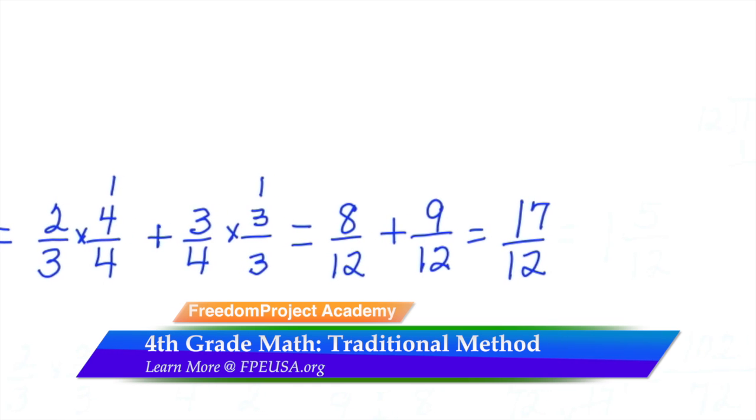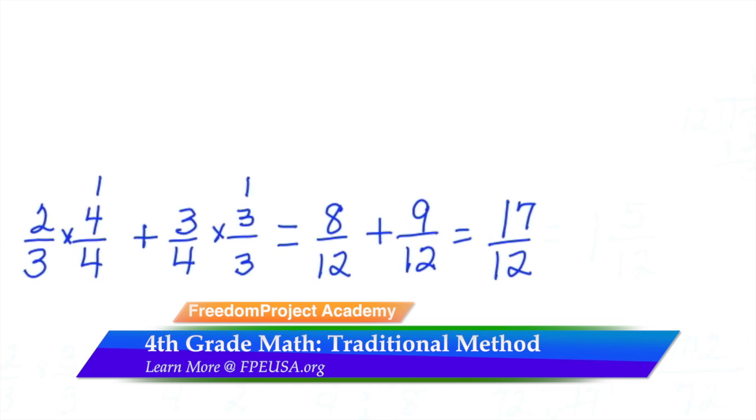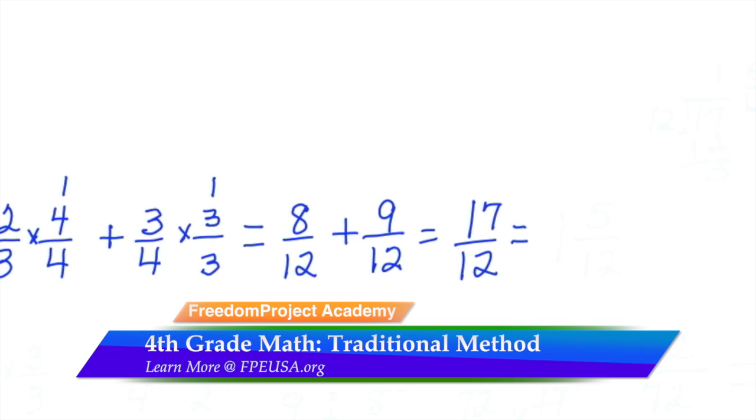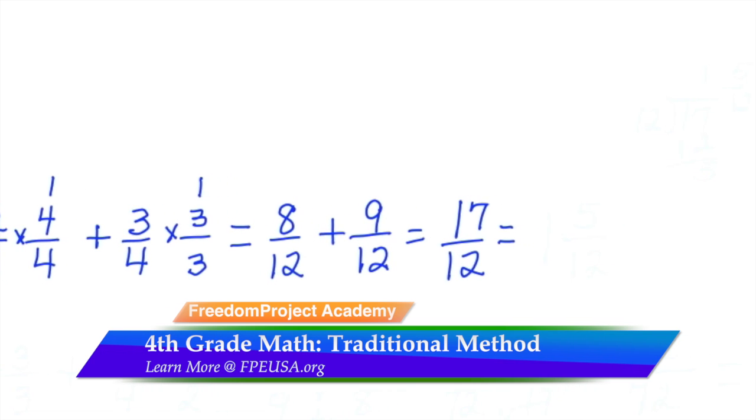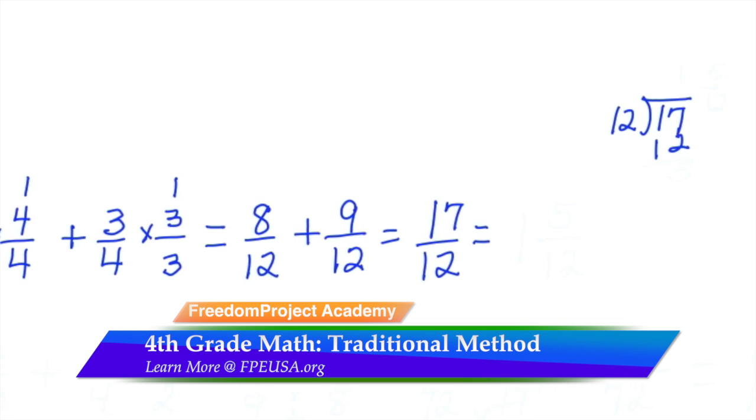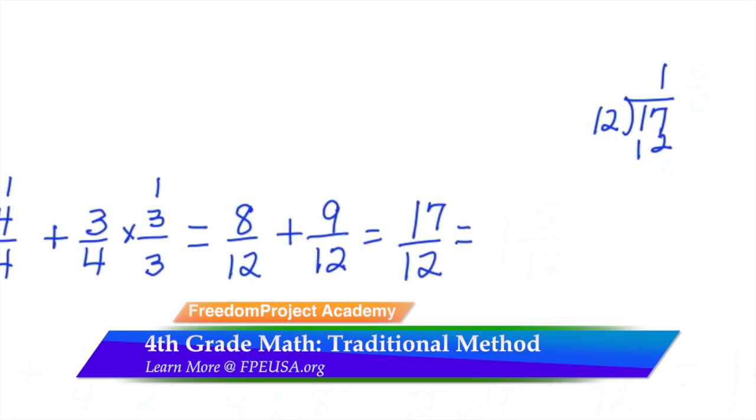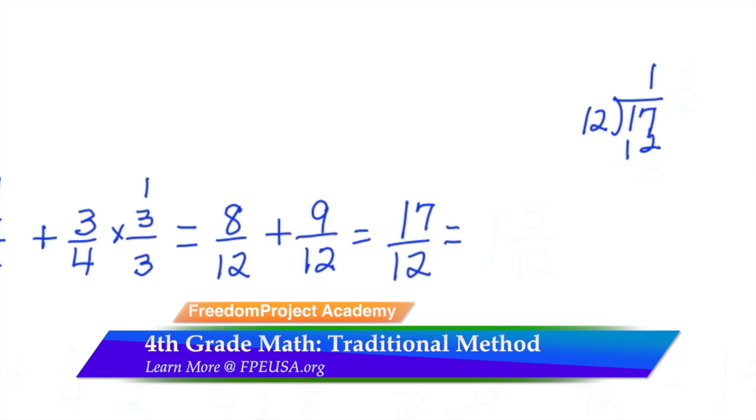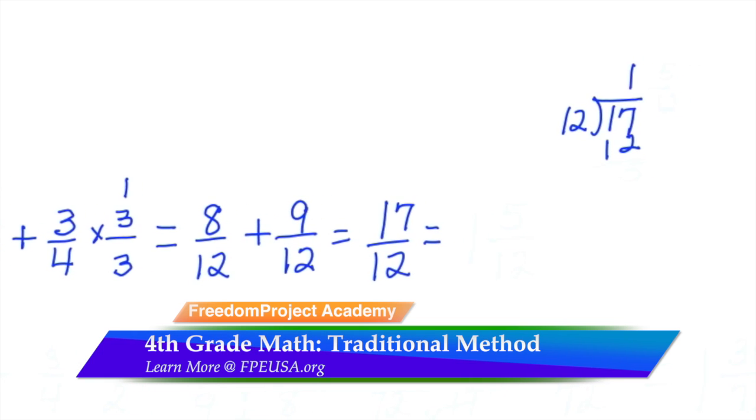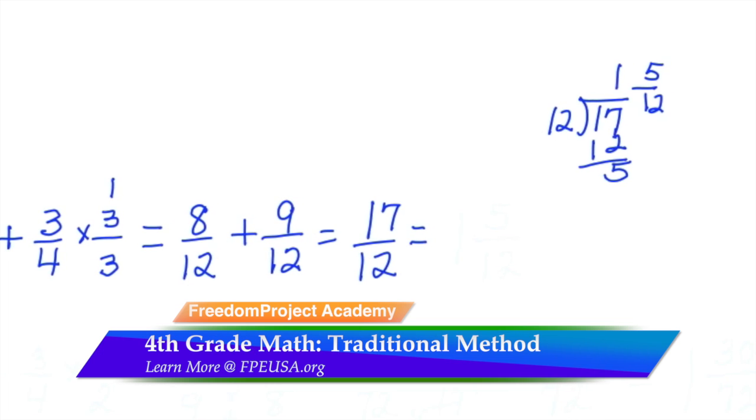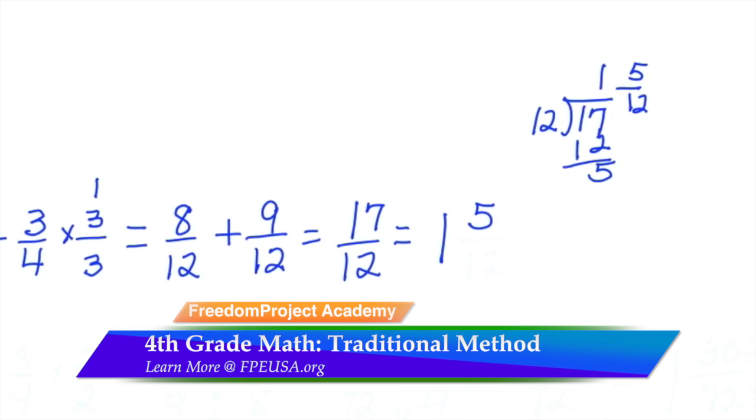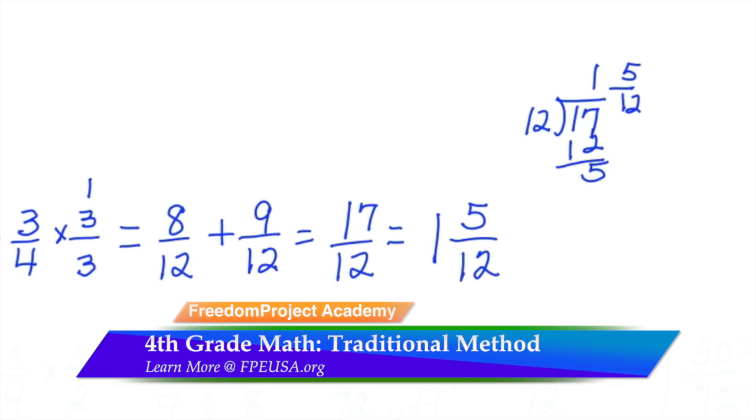Now seventeen-twelfths is an improper fraction, so we must change it to a mixed number by dividing the twelve into seventeen. The twelve into seventeen will get us one and five-twelfths. Twelve goes into seventeen one time with the remainder of five, and we simply put the five over the twelfth to state the remainder as a fraction.